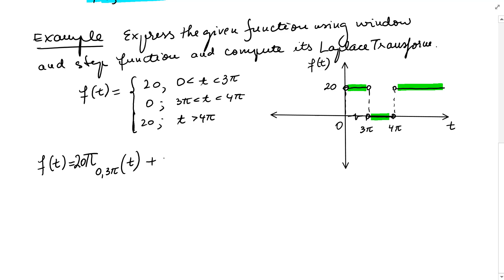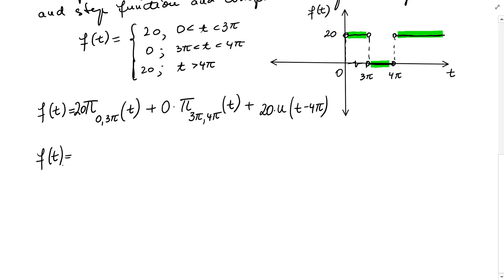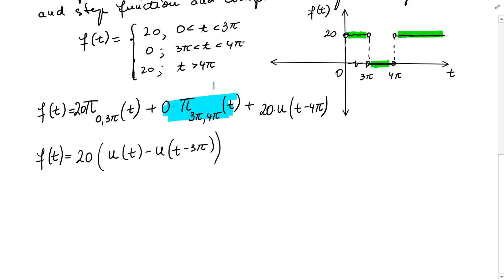Then plus 0 times the window function between 3 pi and 4 pi, since it's 0 there. Plus 20 times u of t minus 4 pi, because the last line is the unit step function shifted 4 pi units to the right scaled by 20. Writing this in terms of unit step functions gives 20 times u of t minus u of t minus 3 pi, plus 20 u of t minus 4 pi.